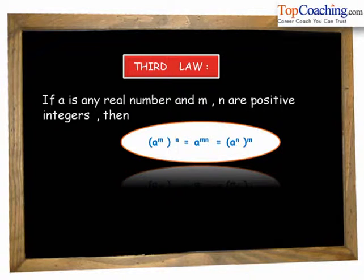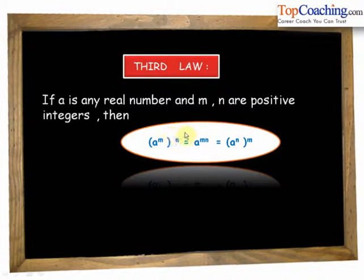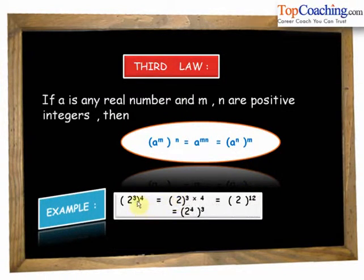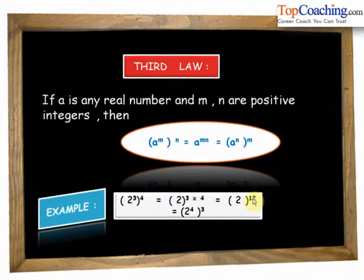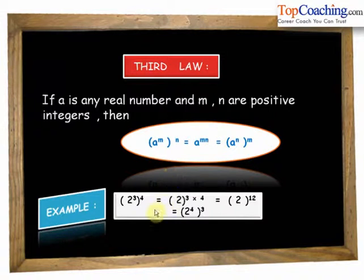This equals a to the power of m into n — we simply multiply both exponents — and this can also be written as a to the power of n to the power of m. For example, 2 cubed to the power of 4 can be written as 2 to the power of 3 into 4, which equals 2 to the power of 12. This could also be written as 2 to the power of 4 whole cube.